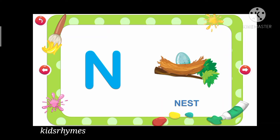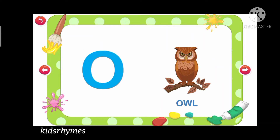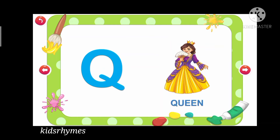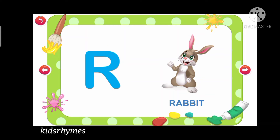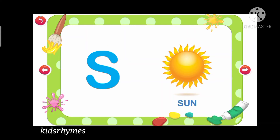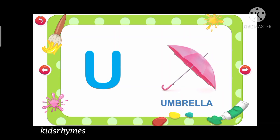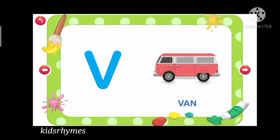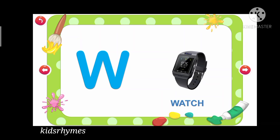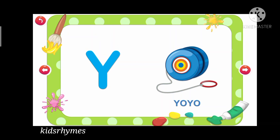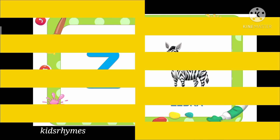N for net, O for owl, P for pan, Q for queen, R for rabbit, S for sun, T for tiger, U for umbrella, V for van, W for wood, X for xylophone, Y for yo-yo, Z for zebra.